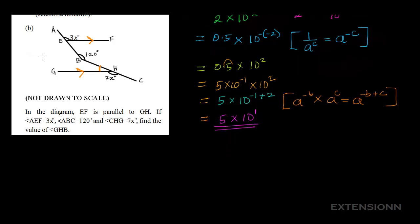Let's imagine we draw a straight line through point B, and we call this line PQ. This line PQ is parallel to EF and also GH. Since this straight line PQ is dividing the angle 120° at B into two parts, we need to distinguish the angles.